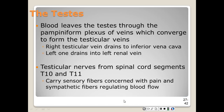Blood leaves the testes by way of the pampiniform plexus of veins, which merges as they pass through the inguinal canal to form the testicular vein. The right testicular vein drains into the inferior vena cava, and the left testicular vein drains into the left renal vein. Lymphatic vessels also drain the testes, traveling through the inguinal canal to lymph nodes near the lower aorta. Lymph from the penis and scrotum travels to lymph nodes adjacent to the iliac arteries and veins in the inguinal region. The testicular nerves lead to the gonads from spinal cord segments T10 and T11.